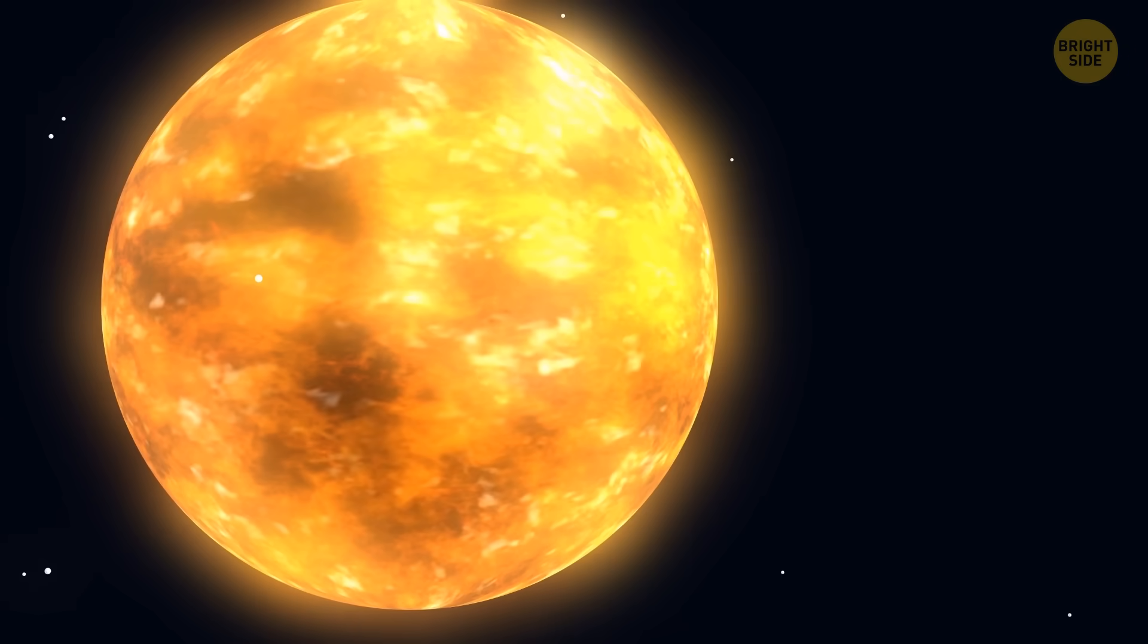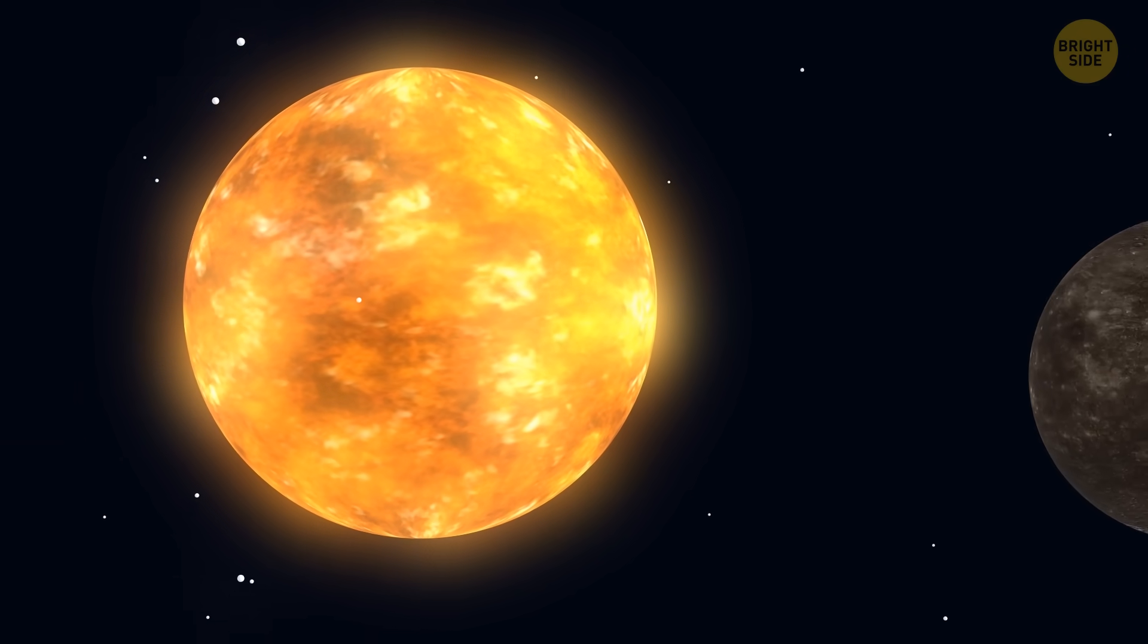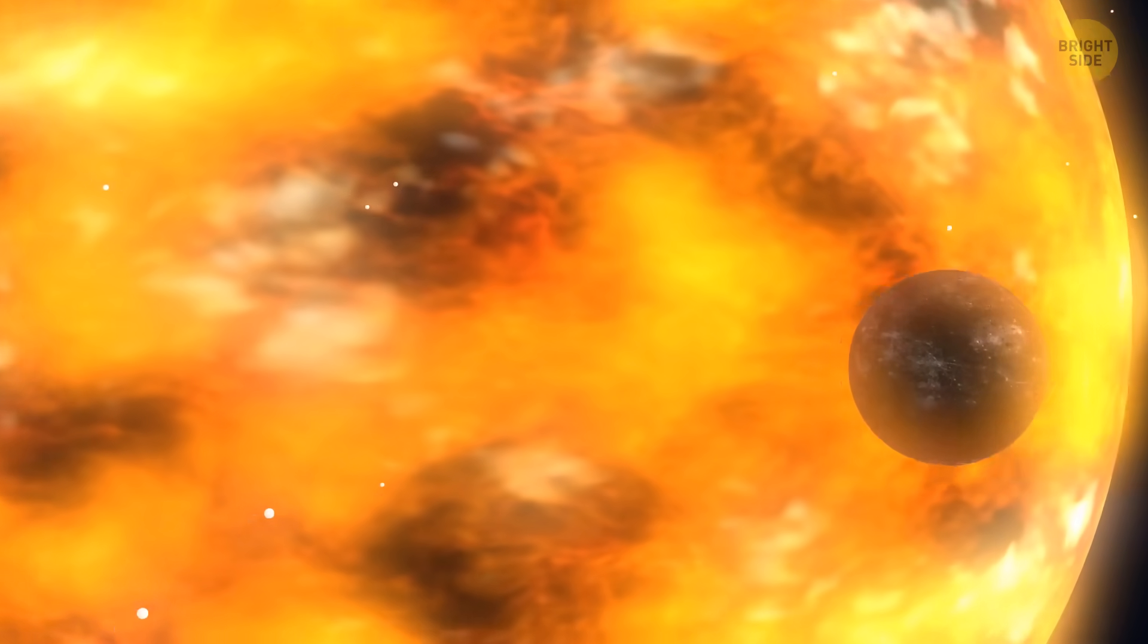That's when the sun is supposed to burn out and expand so much that it will swallow the inner planets of the solar system: Mercury, Venus, Earth, and Mars.